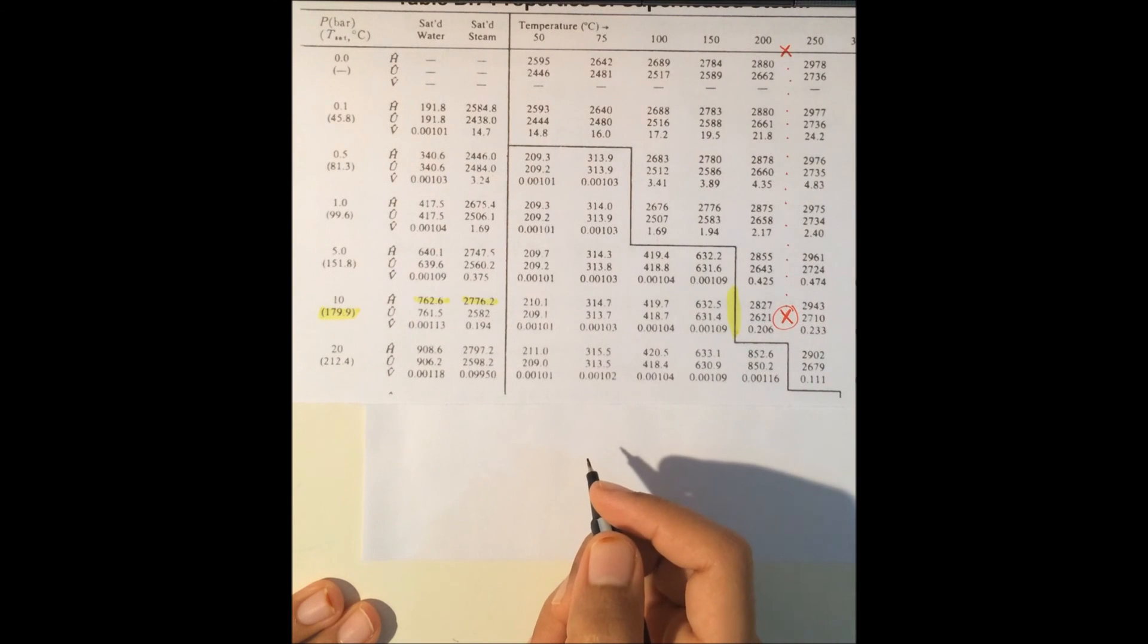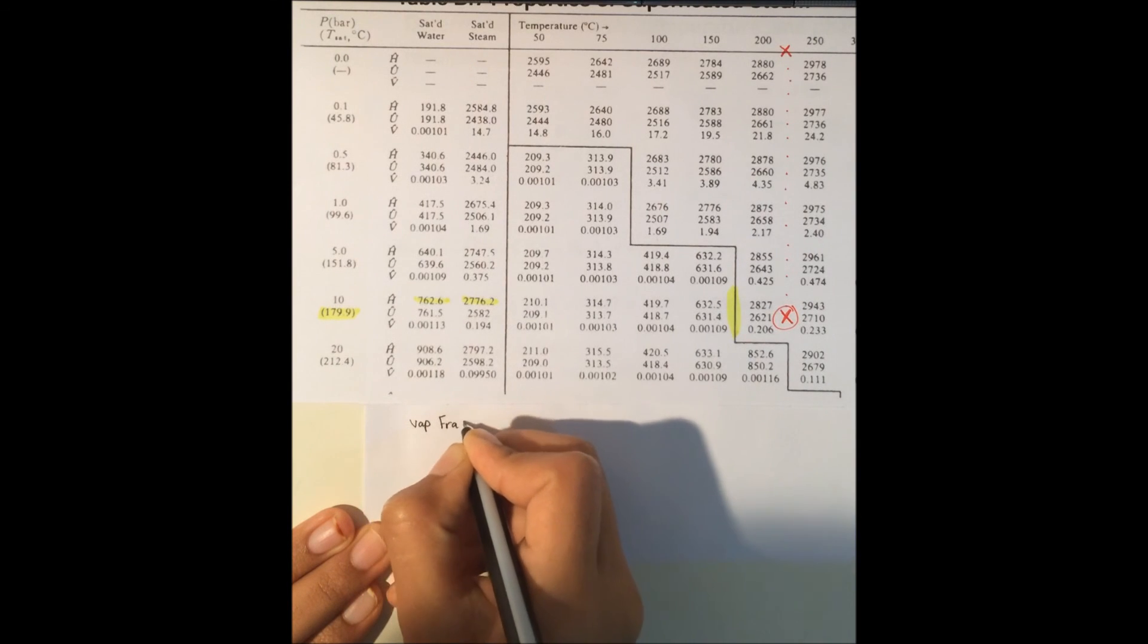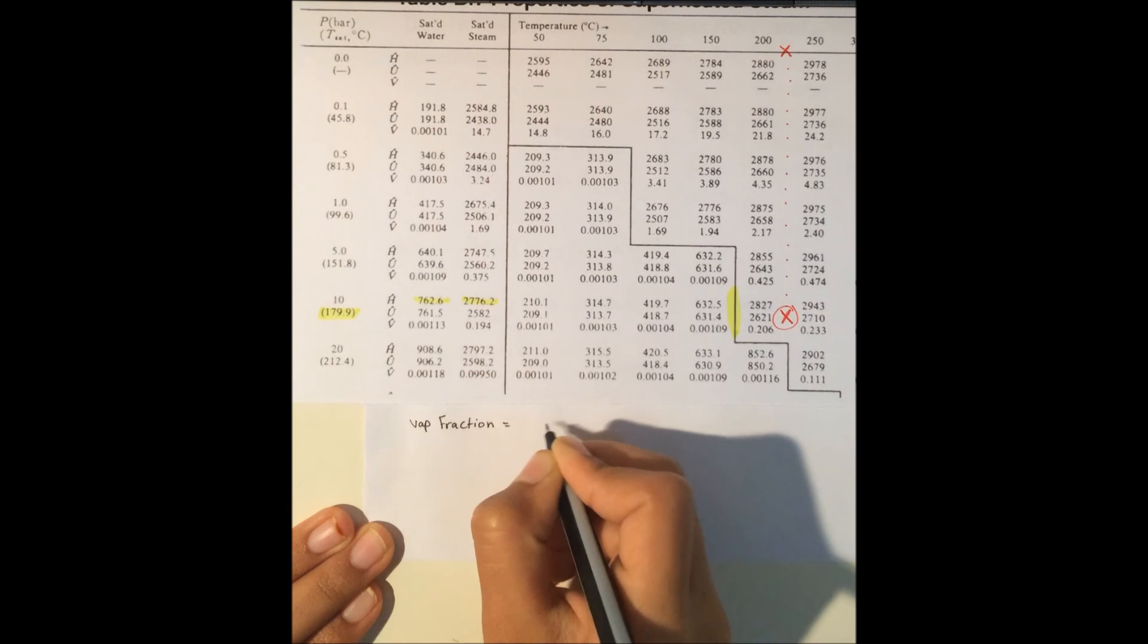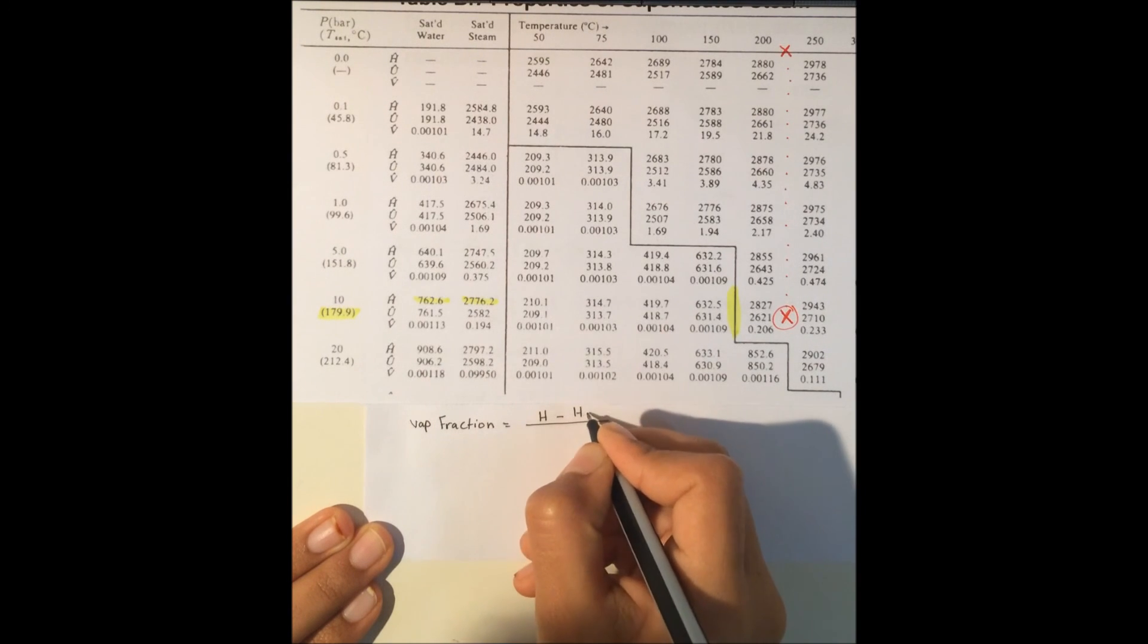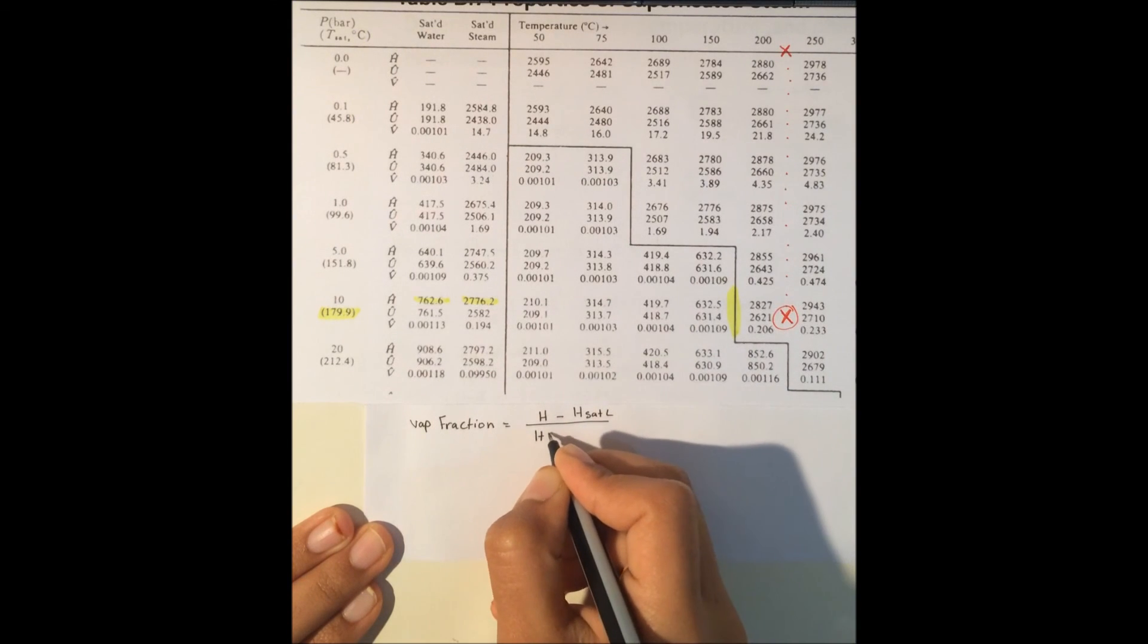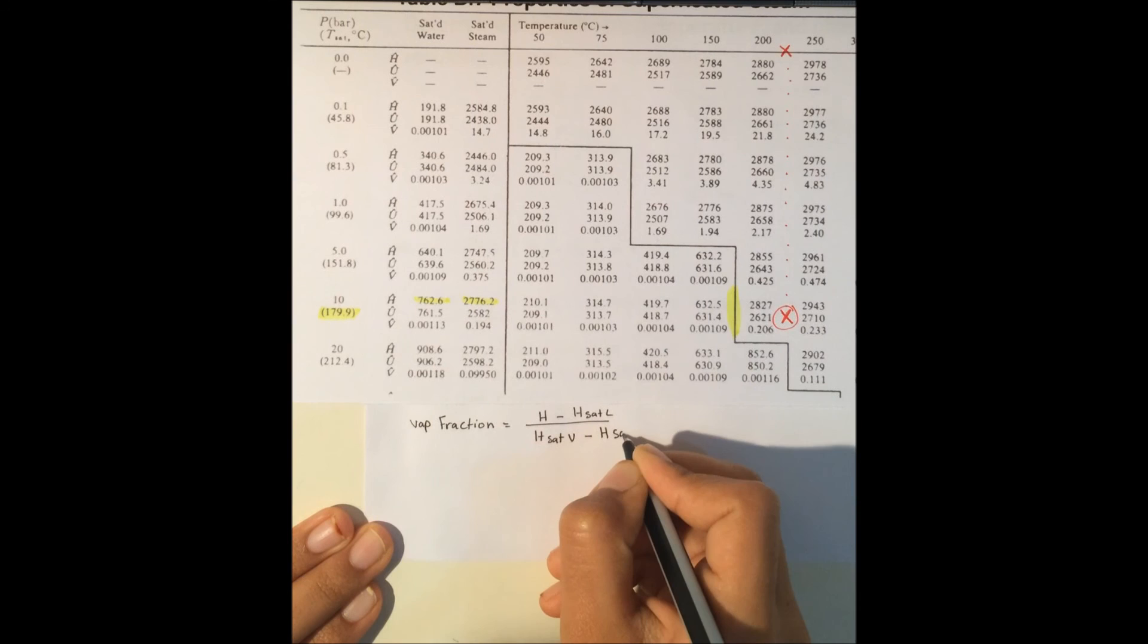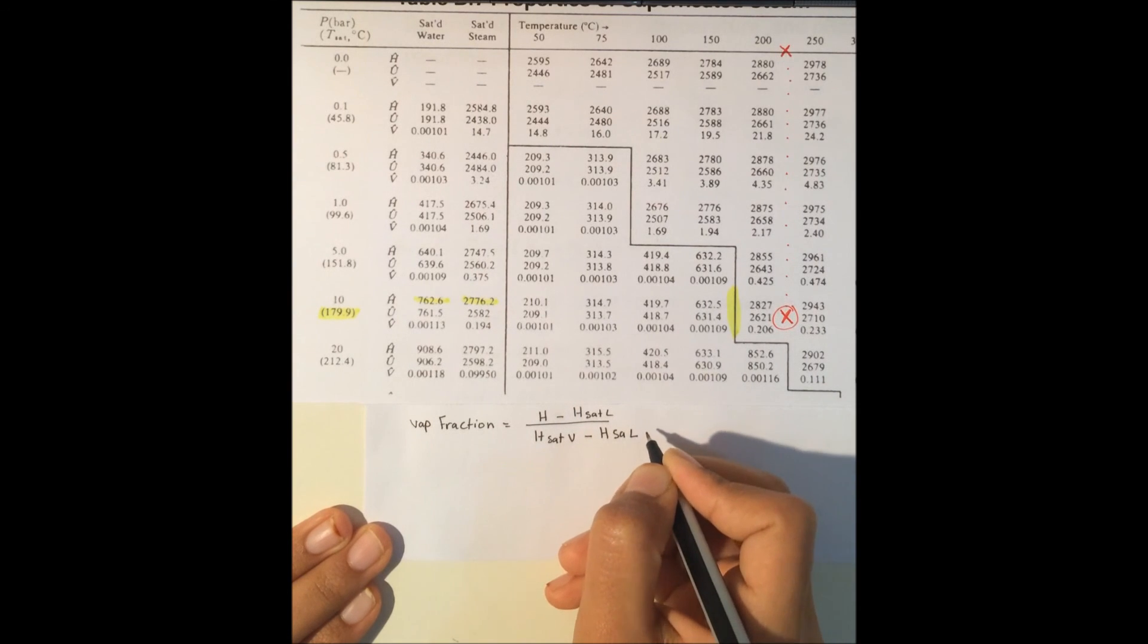The last information is to calculate how much vapor and how much liquid we have. That means we apply the lever rule to determine the composition. Vapor fraction equals (H minus H_saturation liquid) divided by (H_saturation vapor minus H_saturation liquid).